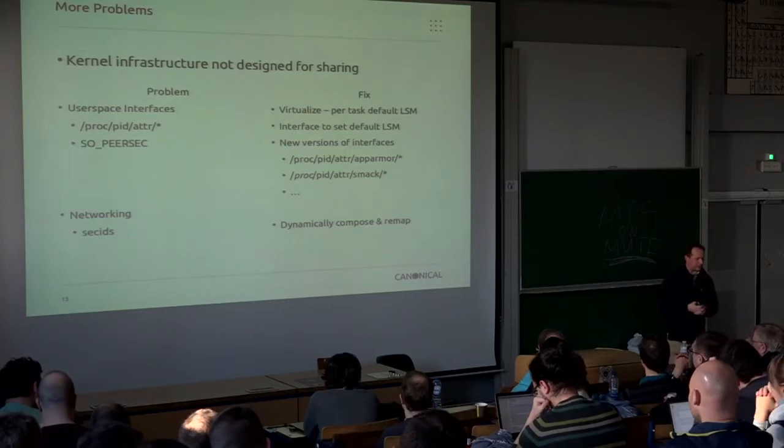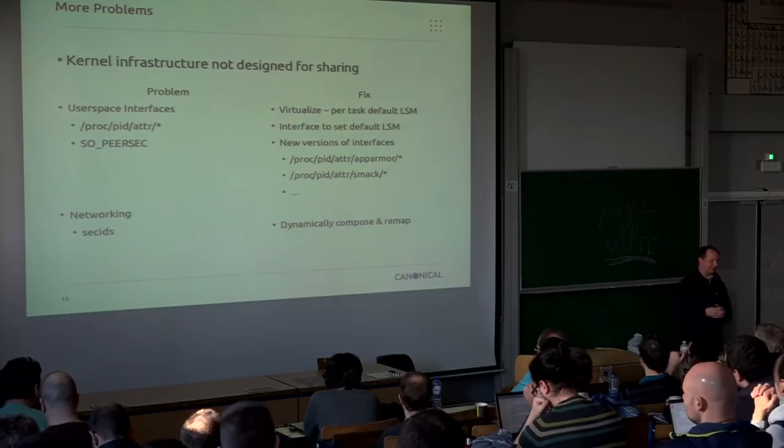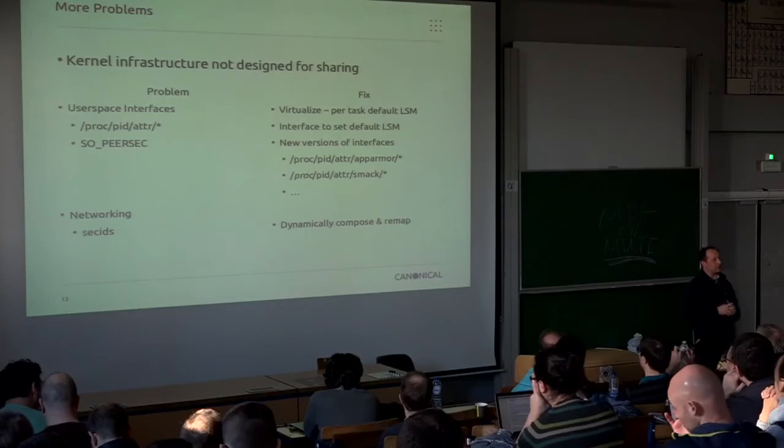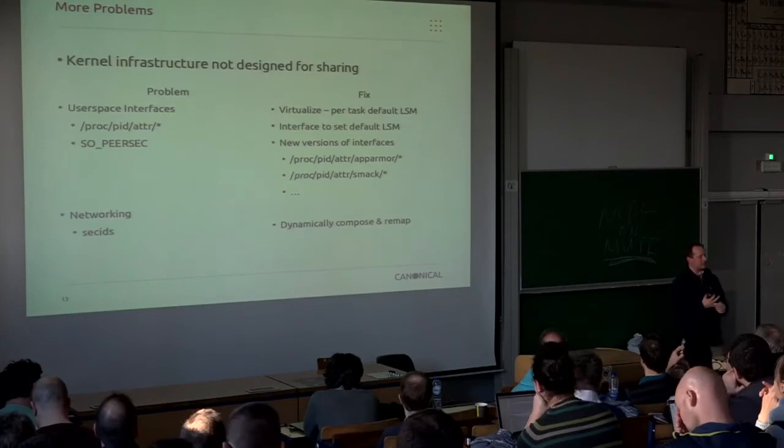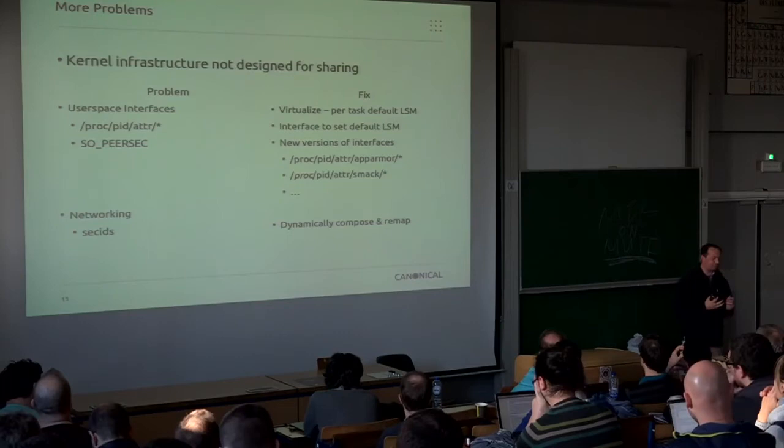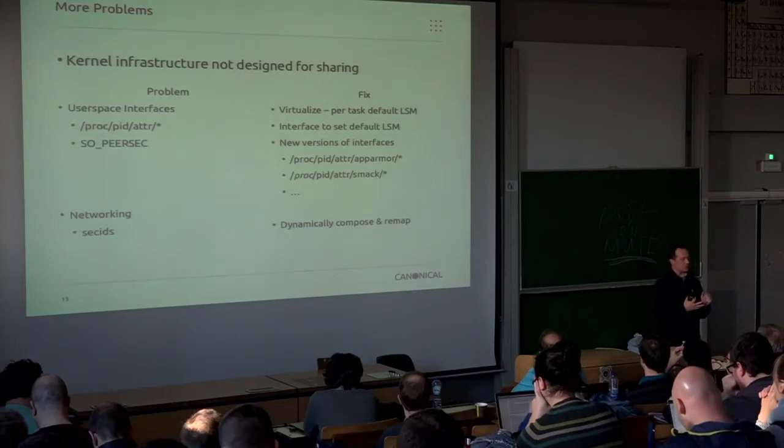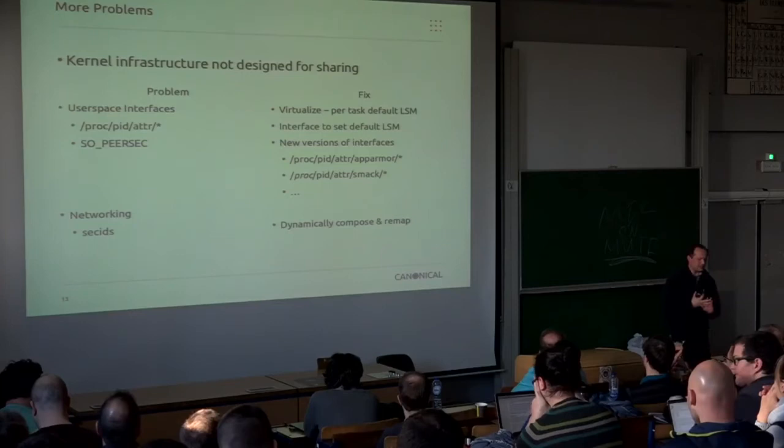Networking is the real problem. There are things called secIDs in the kernel - they're a 32-bit number with no lifetime. They're exposed to user space, and they're all we can get into the network subsystem. The subsystem maintainers won't give us a full pointer or anything to work with. They're used by the audit subsystem and they're global. None of this really works for containers.